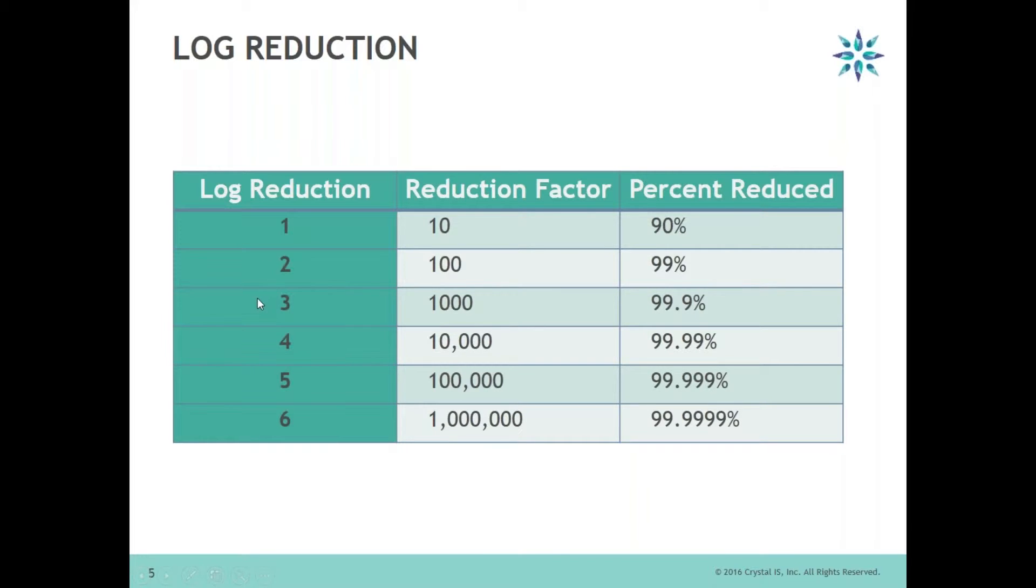When we talk of two log reduction, it's basically reduction of the microbe by 99 percent and so on. But basically there is interest for six log reduction, which is 99.9999 percent reduction in the microbe.